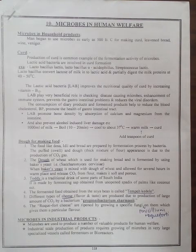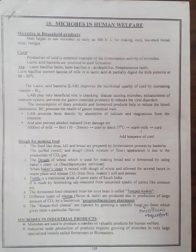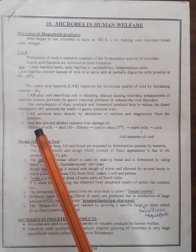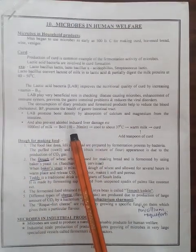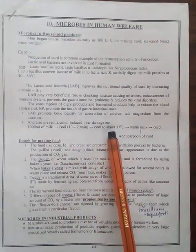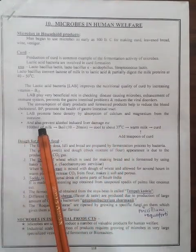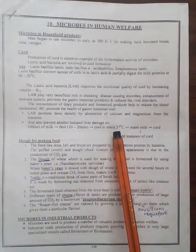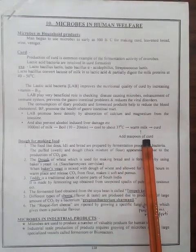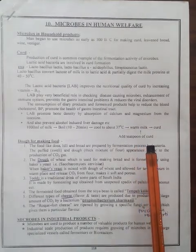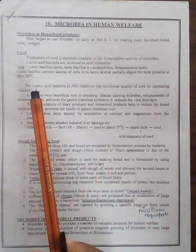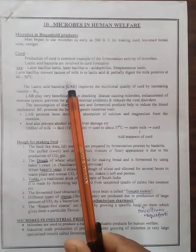Curd is prepared from milk. Take one liter of milk, boil for 10 to 20 minutes, then cool it to 37 degrees Celsius. Add a teaspoon of curd as an inoculum — a starter culture. That starter is lactic acid bacteria.